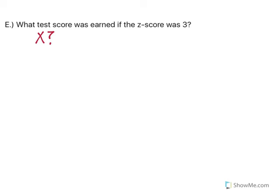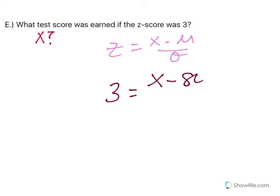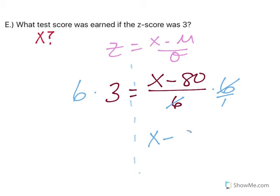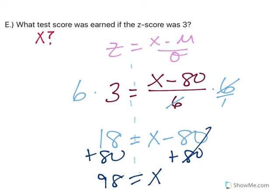Now, what test score was earned if the z-score was 3? We're looking for an unknown value x. Remember your formula and plug in what we know: the z-score is 3, the mean is 80, and the standard deviation is 6. We have to undo the fraction first, so multiply both sides by 6. Those cancel out, leaving x minus 80 equals 18. Adding 80 to both sides, a z-score of 3 means 3 standard deviations away, giving a score of 98.